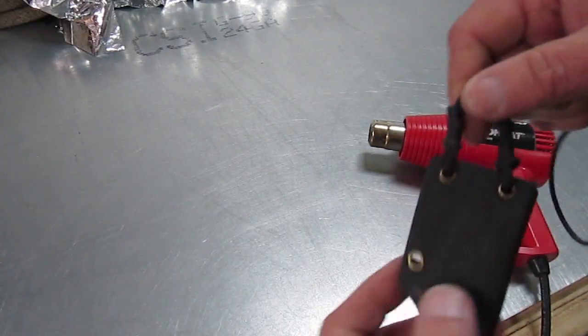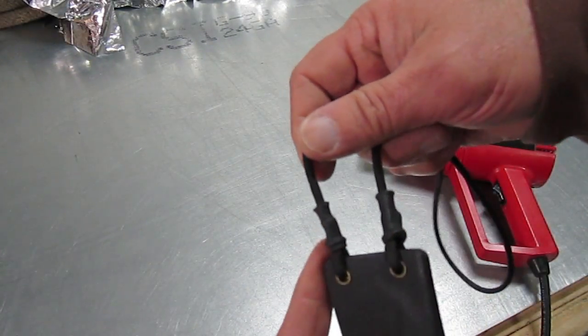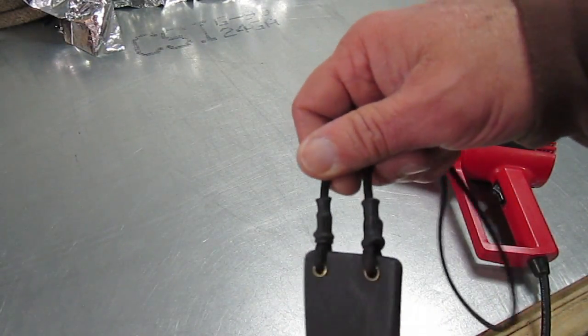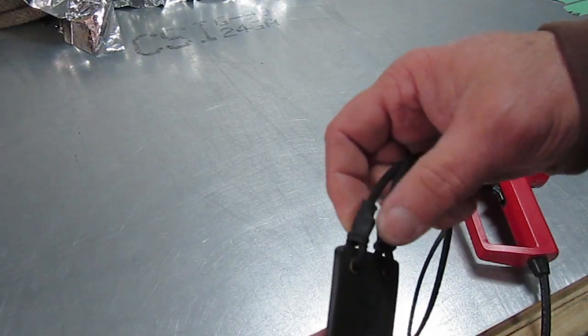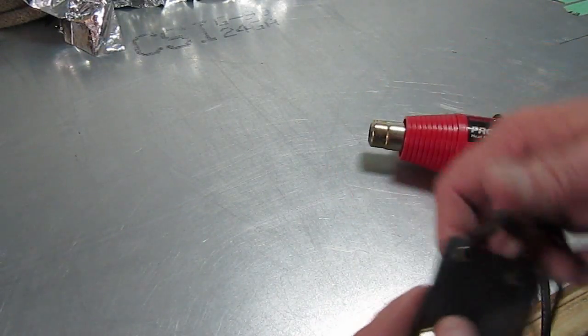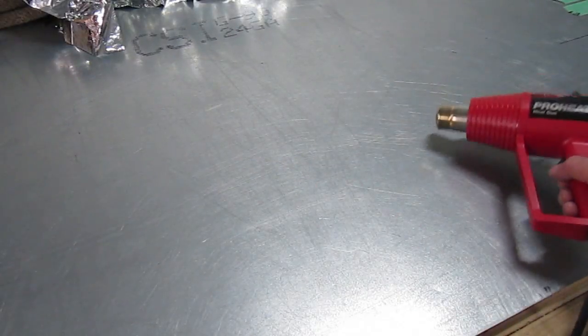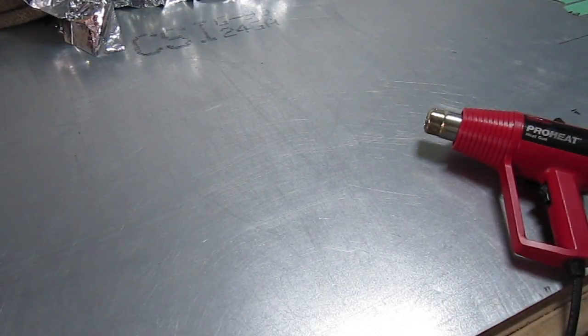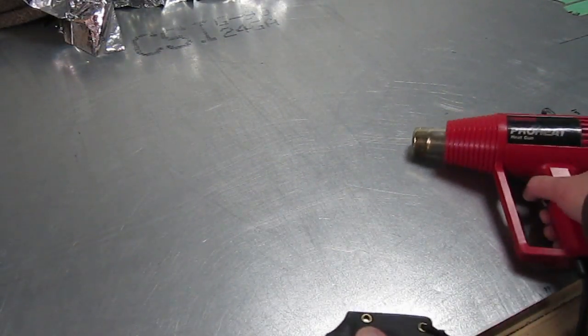We use that for a lot of our things, for example, when I did the video showing how to make the neck cord for this, we use the shrink tubing right here on our crimps. So we're going to use this, and we're going to soften up the Kydex a little bit. So let me turn it on.